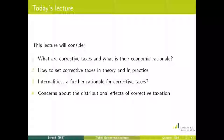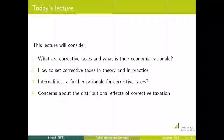My lecture is going to consider four things. Firstly, what exactly do we mean when we talk about corrective taxes and what is the economic rationale underlying that — which we usually take to be the correcting of externalities. Secondly, how we can set taxes optimally according to economic theory, including some practical difficulties, illustrated through a real-world example of alcohol taxation. Thirdly, a further rationale: correcting for internalities. And fourthly, concerns about the distributional effects of corrective taxation.